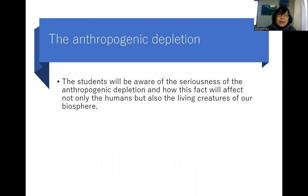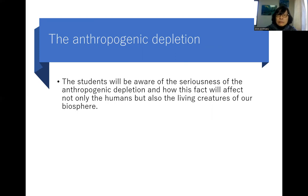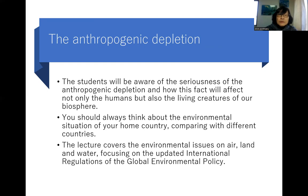Now let's see about anthropogenic depletion. Anthropogenic, as you know, refers to the activity of humans. Students will be aware of the seriousness of anthropogenic depletion and how this will affect not only humans but also the living creatures of our biosphere. You should always think about the environmental situation of your home country, comparing it with different countries.